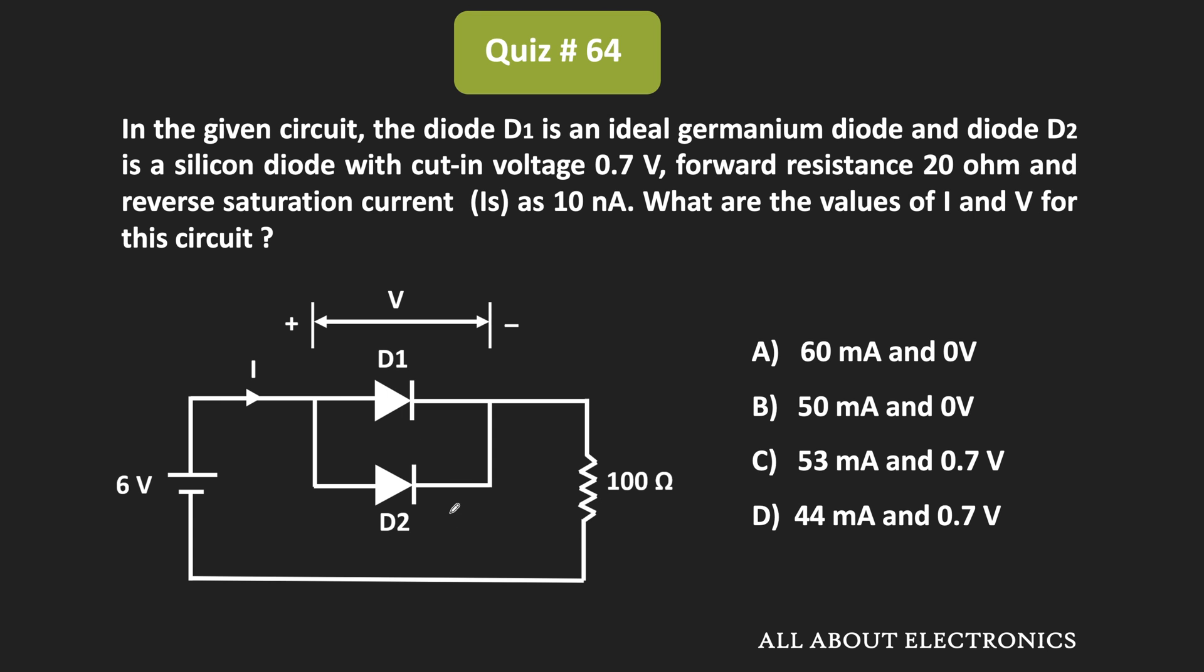For this silicon diode D2, the cut-in voltage or forward voltage drop is 0.7V, while the forward resistance is 20Ω. We've also been given that the reverse saturation current Is is 10nA. We need to find current I and voltage V across this diode.